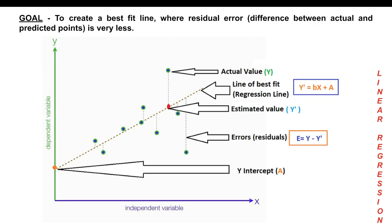Remember that in linear regression the goal is to create a best fit line — to generate y = mx + c. The notation may differ depending on the source you learn from, such as Andrew Ng, but ultimately you are deriving y = mx + c. Here, y is the dependent variable and x is the independent variable. You initially train your model on both. The dotted line you see on screen is the line of best fit, also called the regression line.